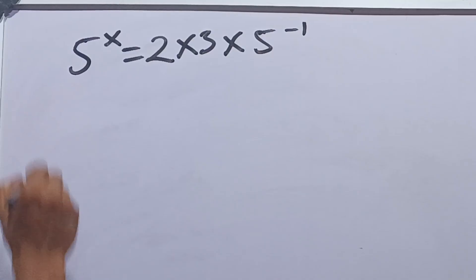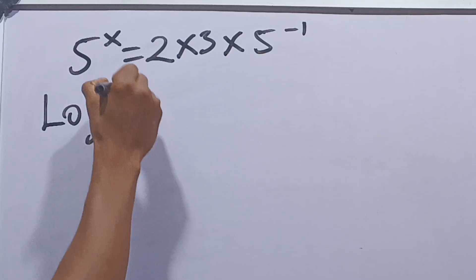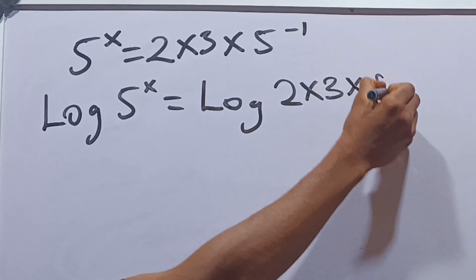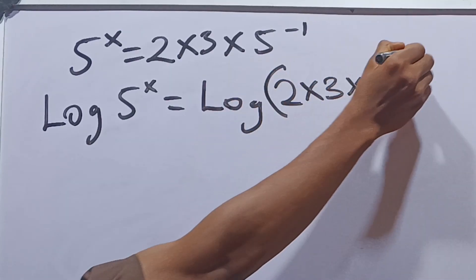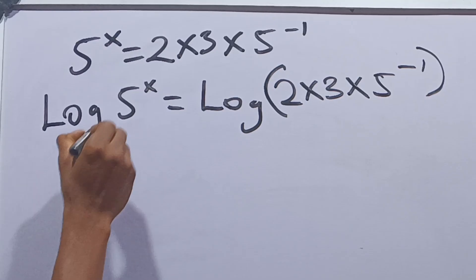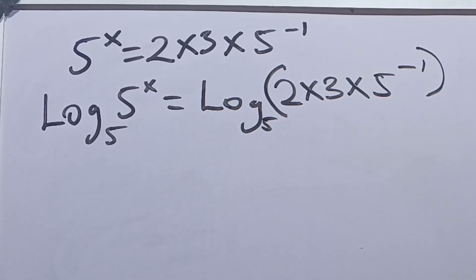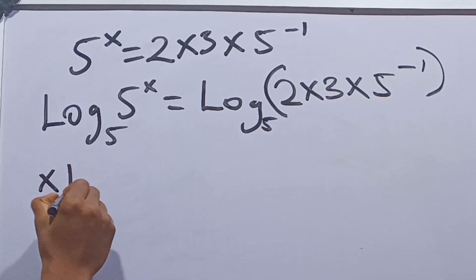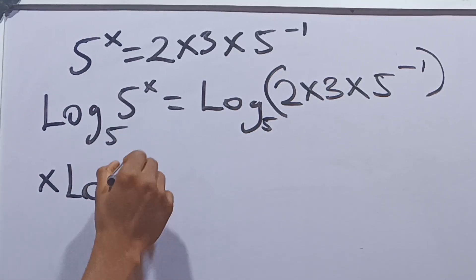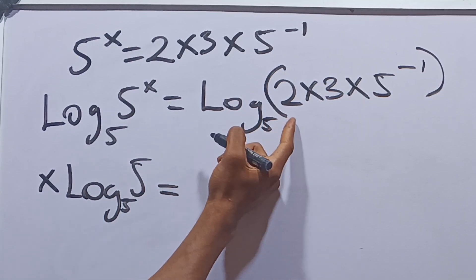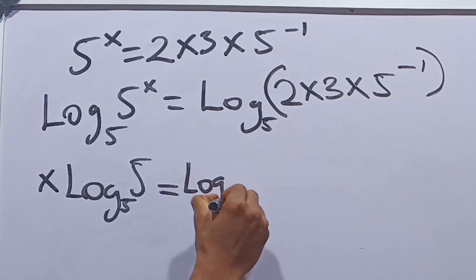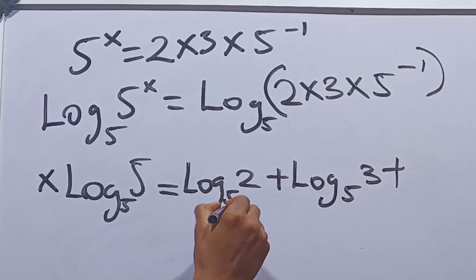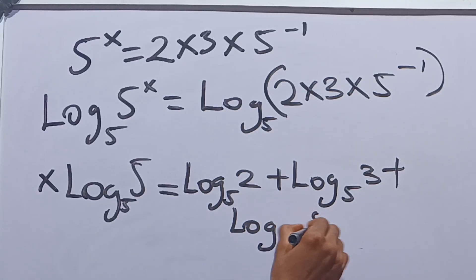Moving on from here, let's take the logarithm of both sides in the base of 5. When you have this, you multiply the power with the log. So we have x multiplied by the log of 5 in base 5, equal to — splitting up and putting plus — log base 5 of 2, plus log base 5 of 3, plus log base 5 of 5 to the power of negative 1.